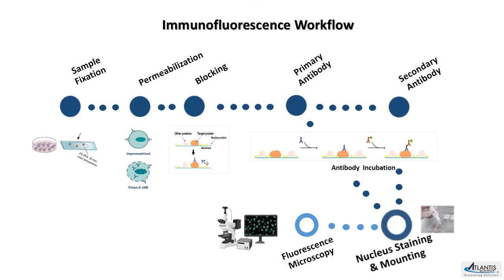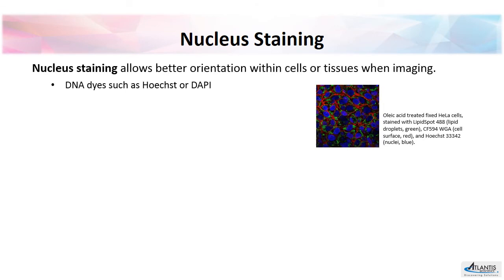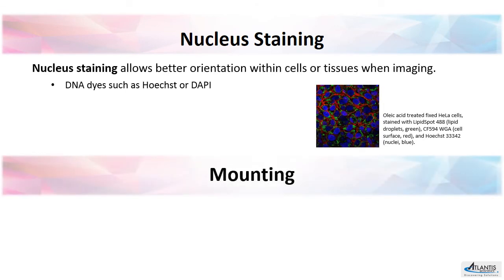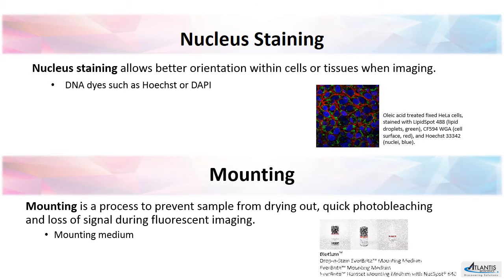The last step before sample visualization is nuclear staining and sample mounting. This is to better orientate cellular structures and to protect and preserve the sample when imaging.